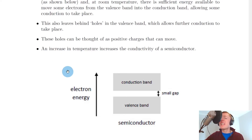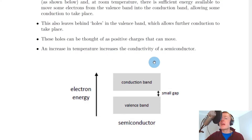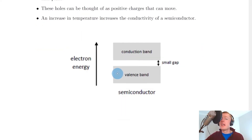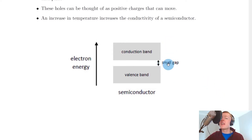An increase in temperature increases the conductivity of a semiconductor — if you increase the temperature of a material, the ability of that material to conduct increases. Here's our energy diagram for a semiconductor. Unlike an insulator which has a large band gap, we now have a small band gap between the valence band and the conduction band.